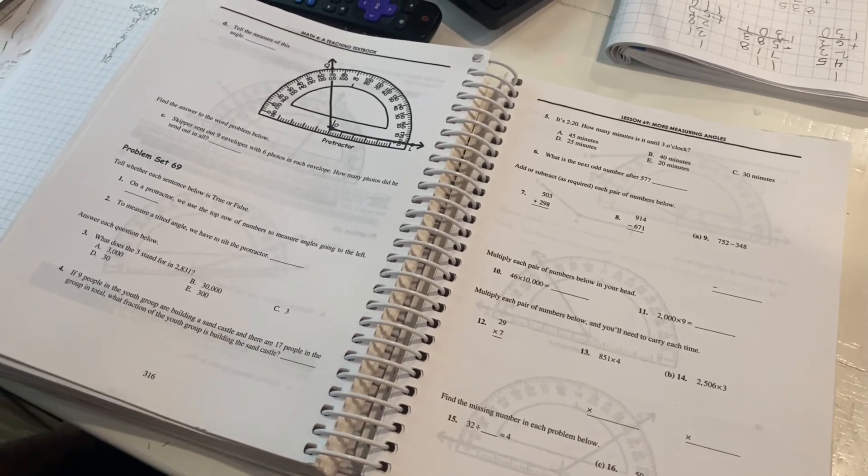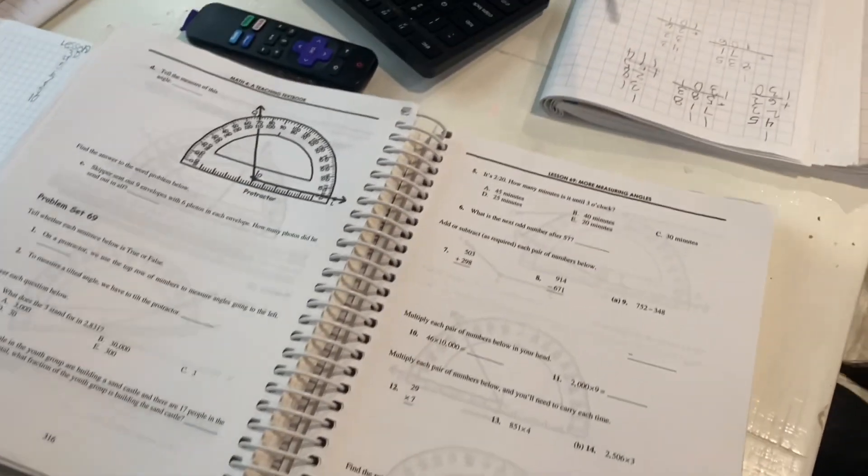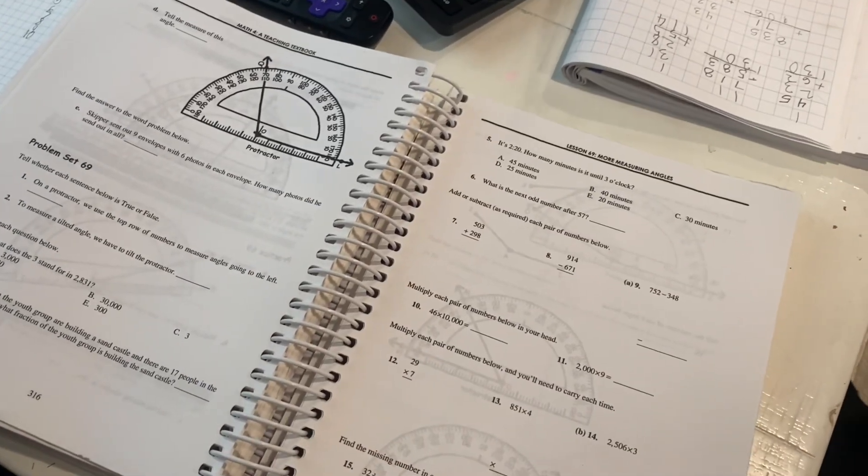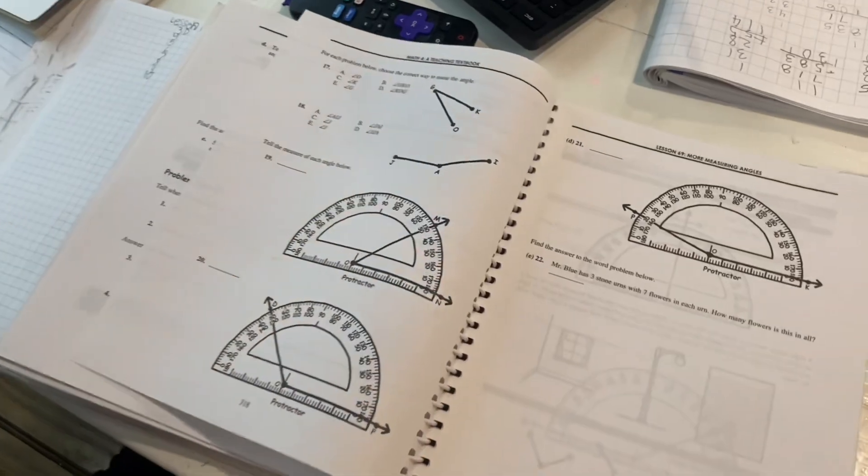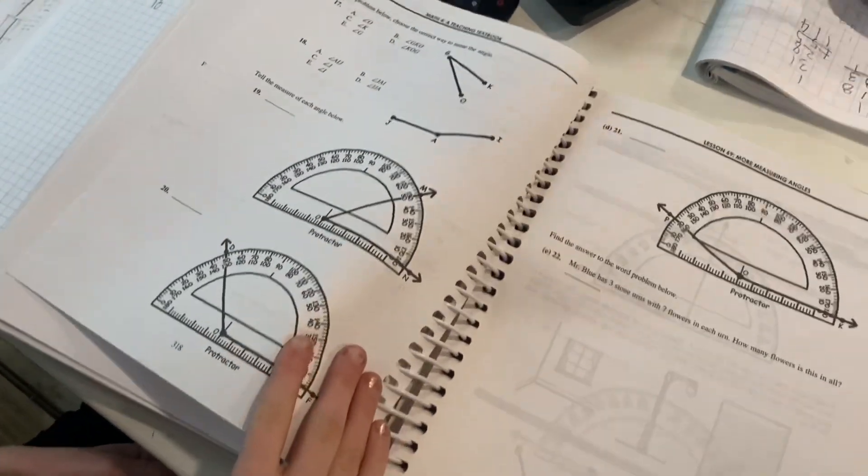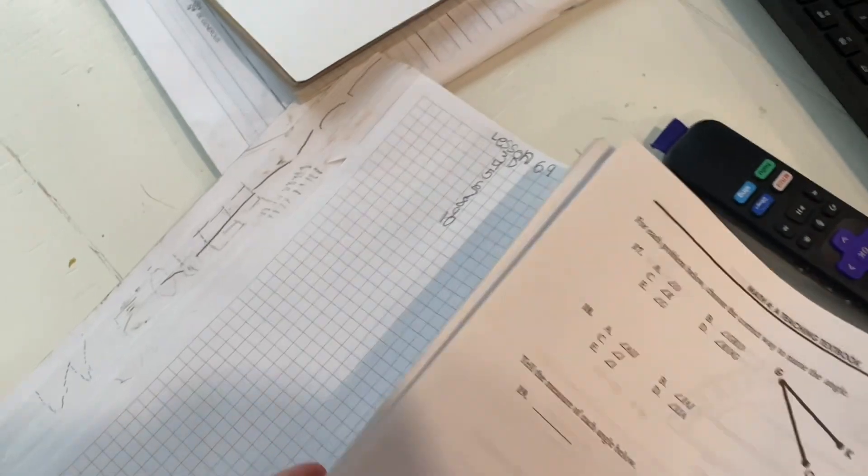Now this is my fourth grader. She is also using Teaching Textbooks and she has opted to do it in the book as well. So she is going through, this is what her book looks like. I just wanted to show you a different grade level what that looks like. But she does have the option of doing it on the computer as well like her younger brother.